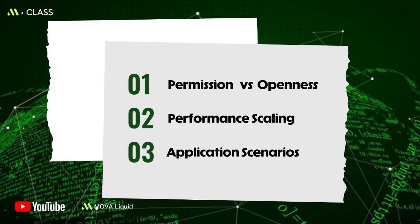First, permission versus openness. Public chains are fully open to the public with no barriers to reading, writing, or validating. Private chains typically require member admission and permission tiers, emphasizing data boundaries and controlled access.